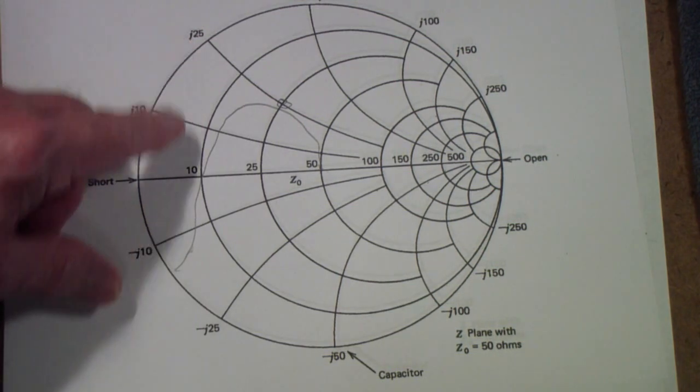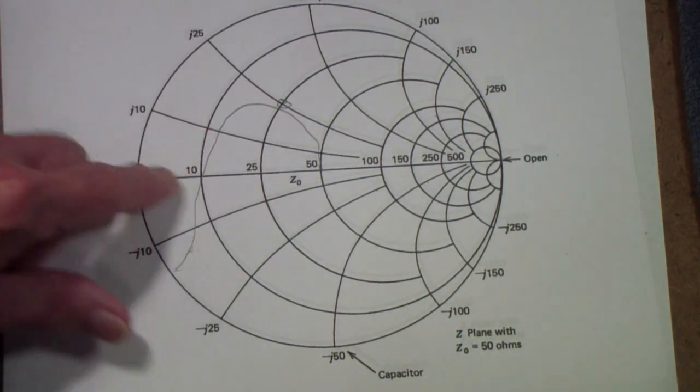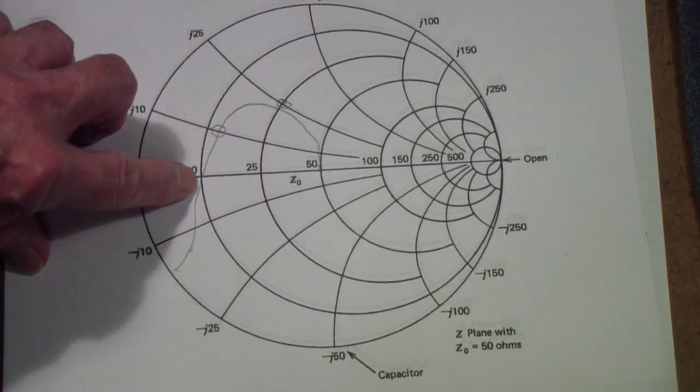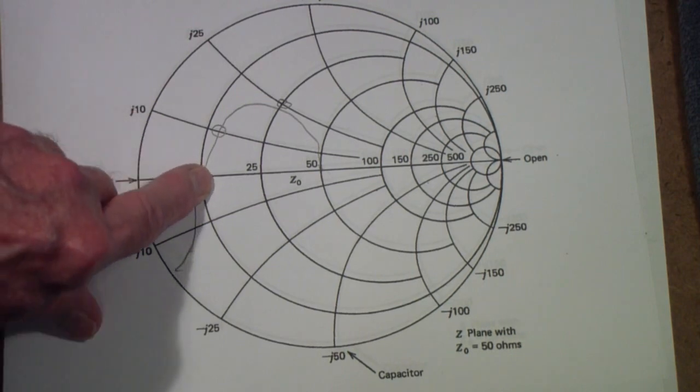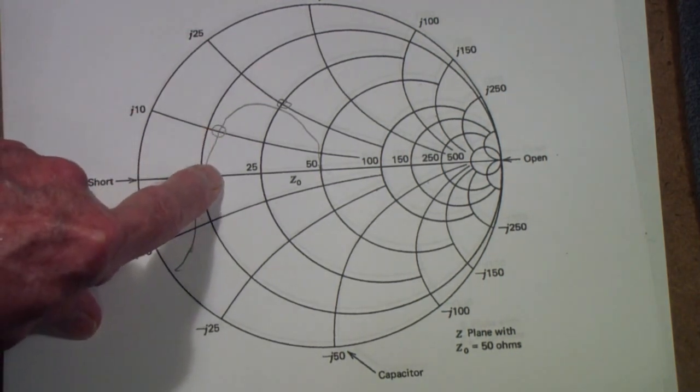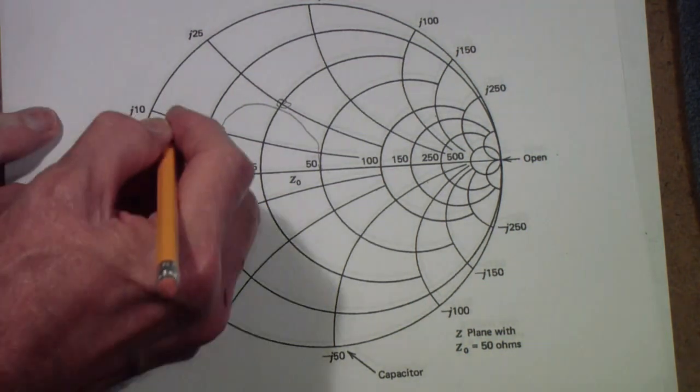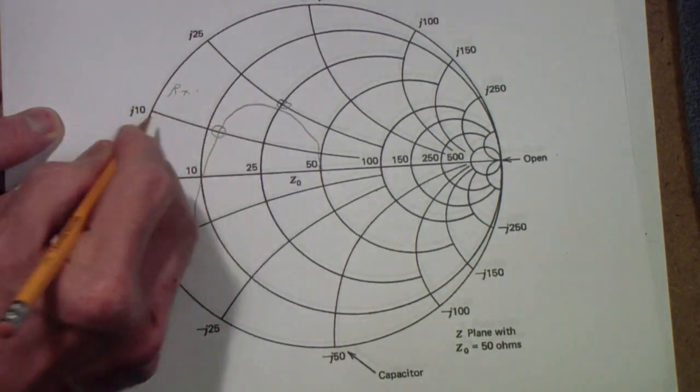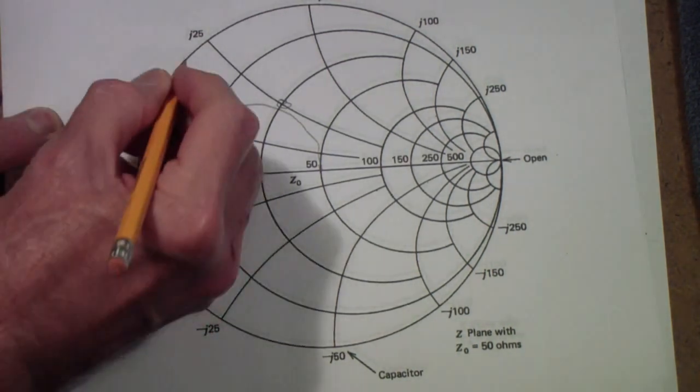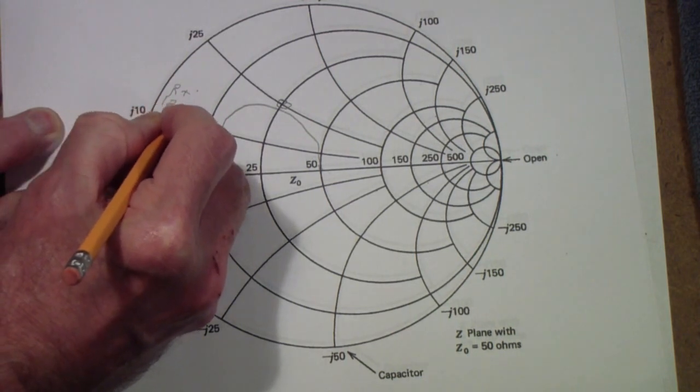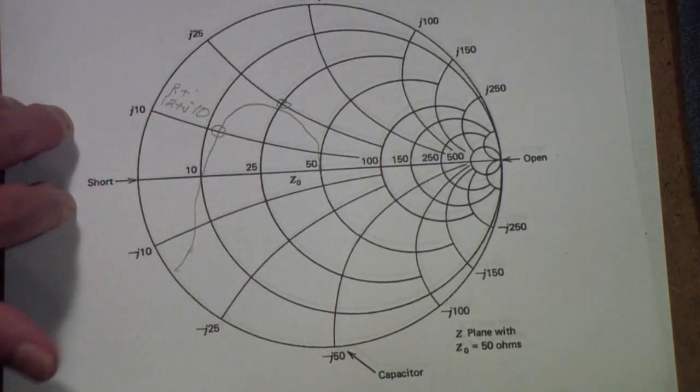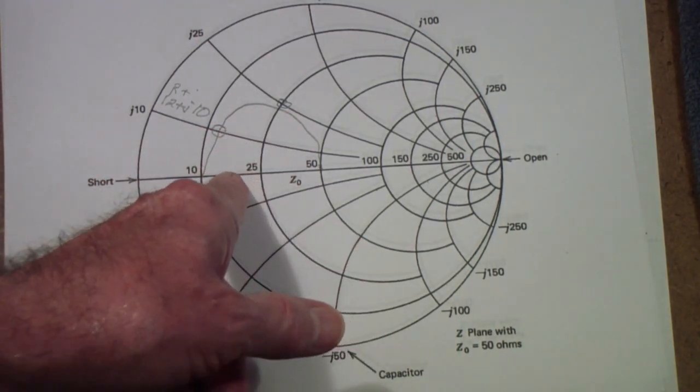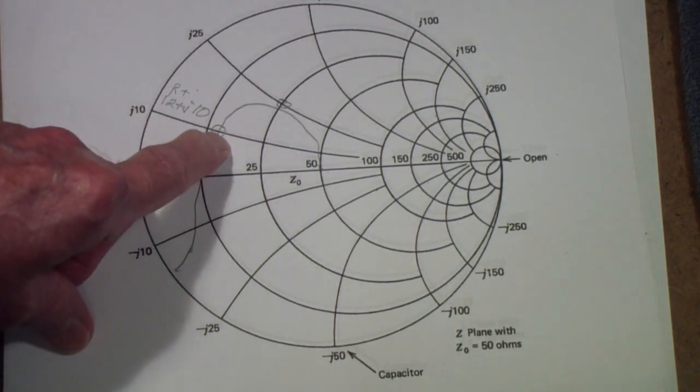Now, they're not always equal, of course. For example, at this point, our J value is 10. Our R value is a little over 10, so it's maybe about 12. So, this point might be 12 plus J10, 12 because it's on the 12 circle for resistance and it's on the J10 arc.